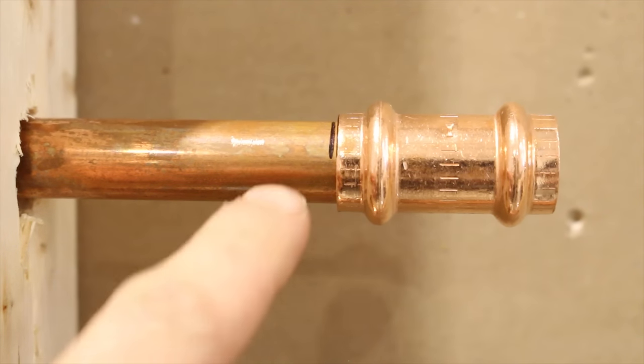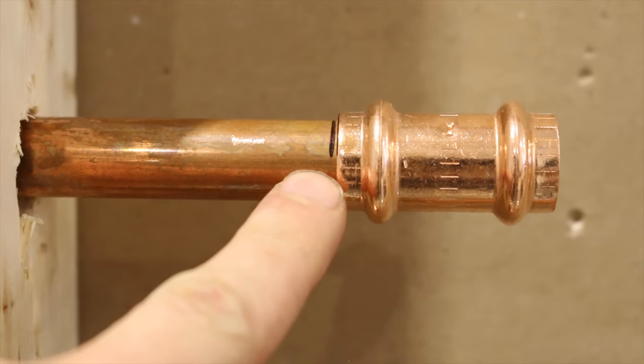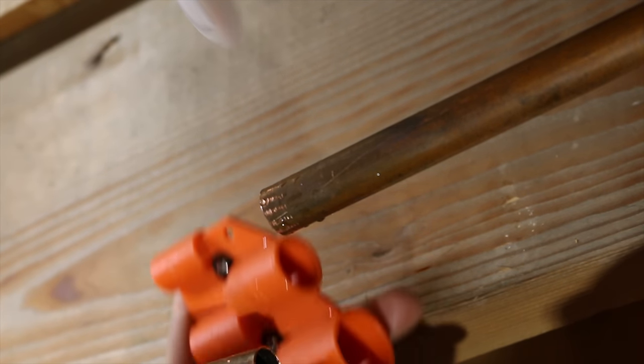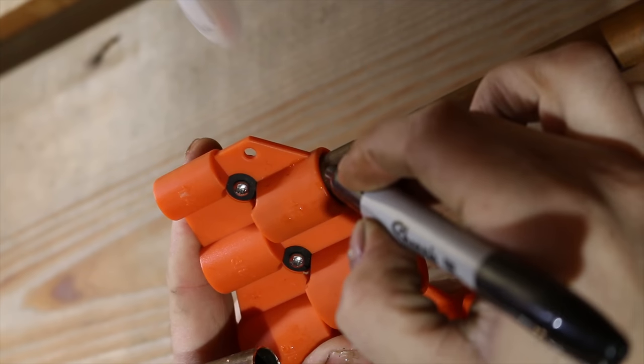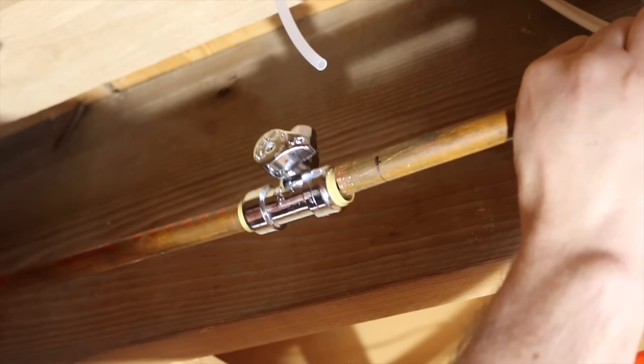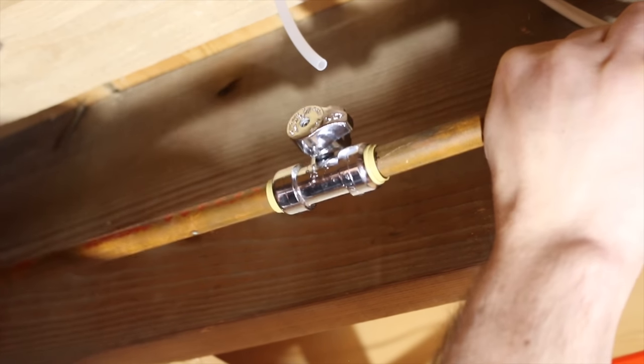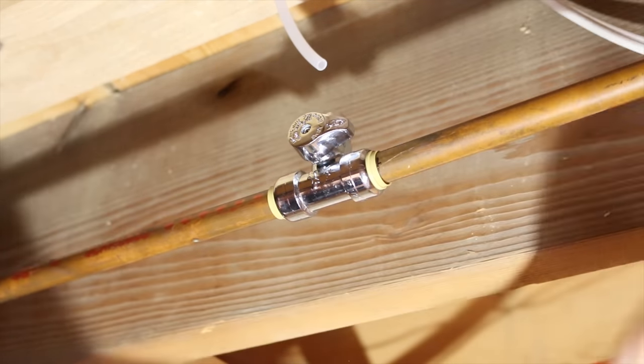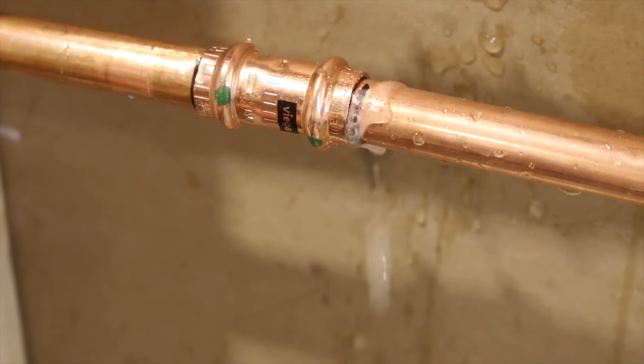Number nine is not making a reference mark when installing ProPress or SharkBite fittings. Whenever installing any fitting with a gasket such as a push fitting or ProPress fittings, it's super important to make a reference mark to know if the fitting is in all the way. A lot of installers will skip this step and get leaks once the pressure's back in because the fitting wasn't pushed in all the way.